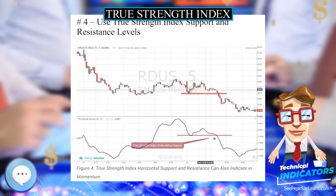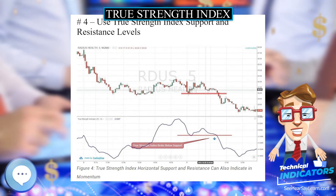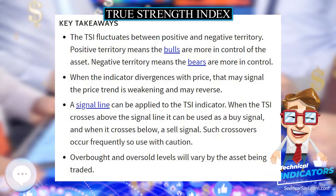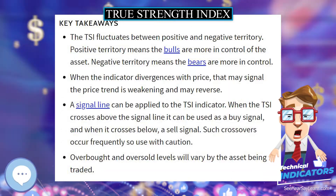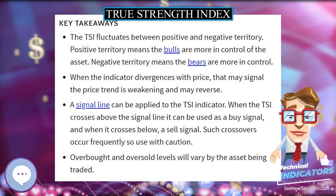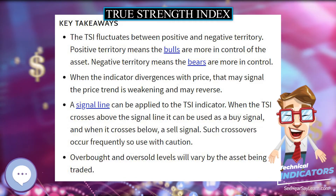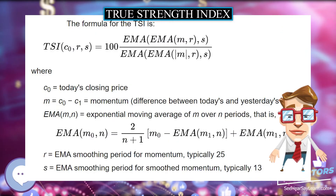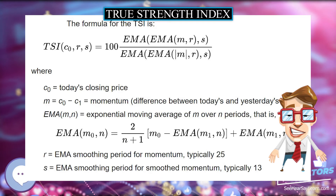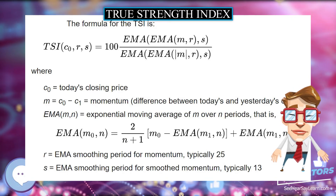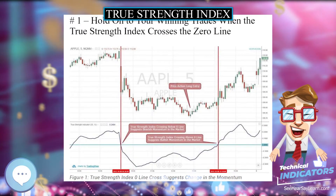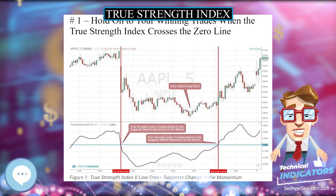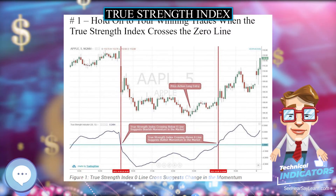The TSI is a double smoothed indicator, meaning that a moving average applied to the data — daily momentum in this case — is smoothed again by a second moving average. The calculation for TSI uses exponential moving averages. The formula for the TSI is defined by the following components.